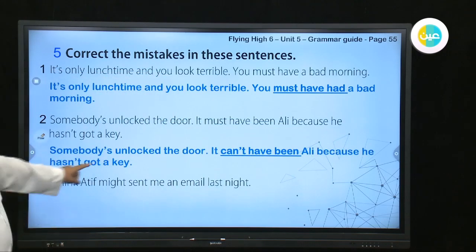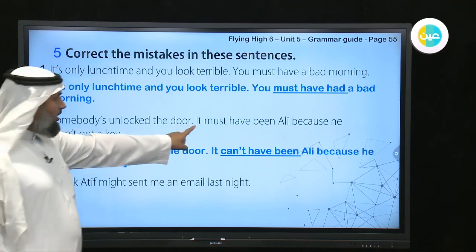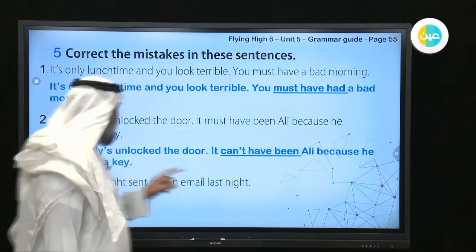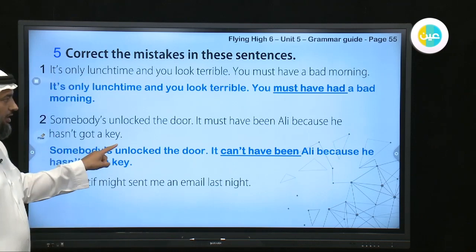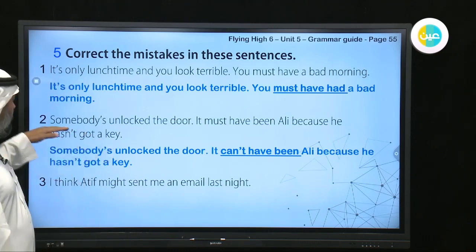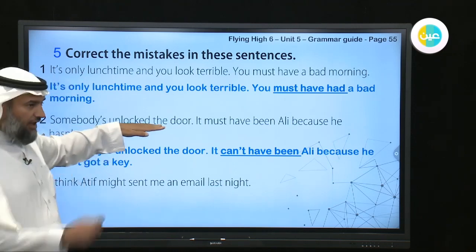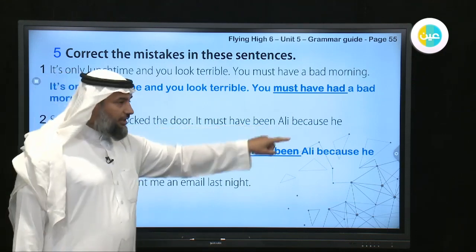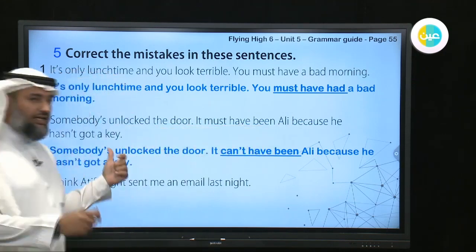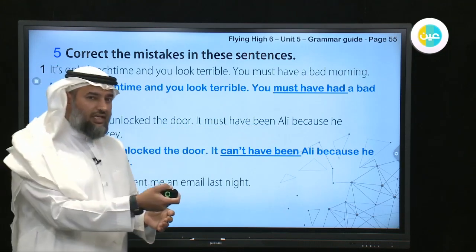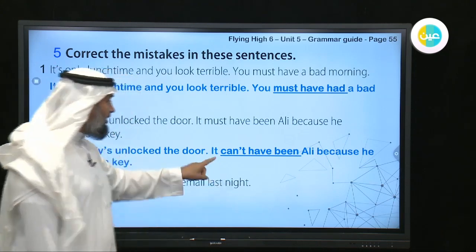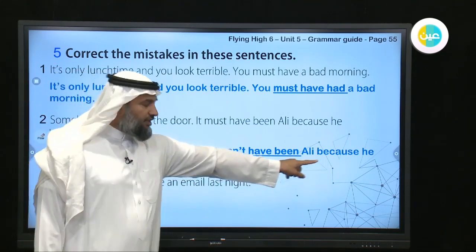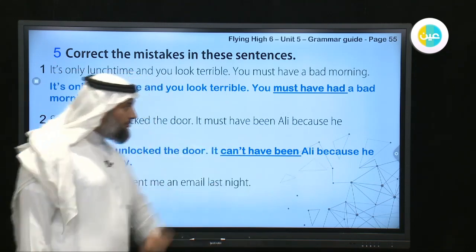Next sentence: 'It must have been Ali because he hasn't got a key.' Someone unlocked the door, but Ali doesn't have a key — so he couldn't have unlocked it. The correction is: 'It COULDN'T have been Ali because he hasn't got a key.'